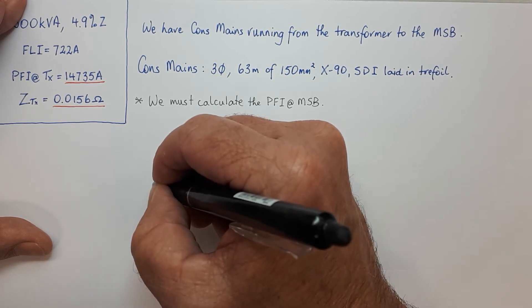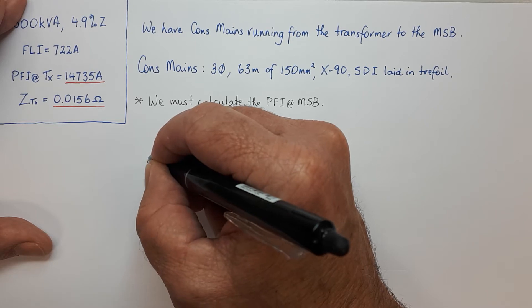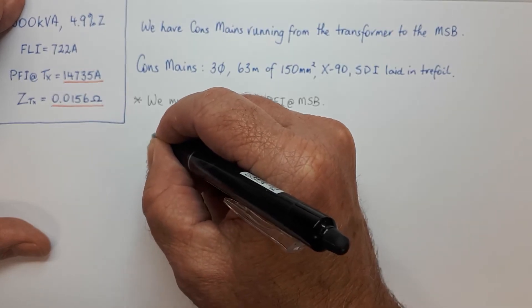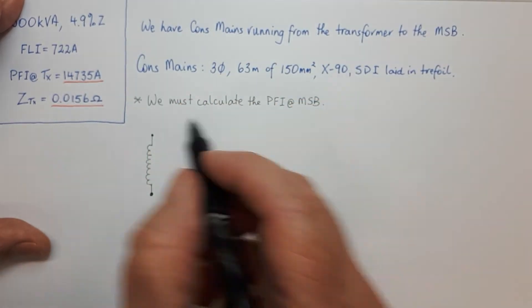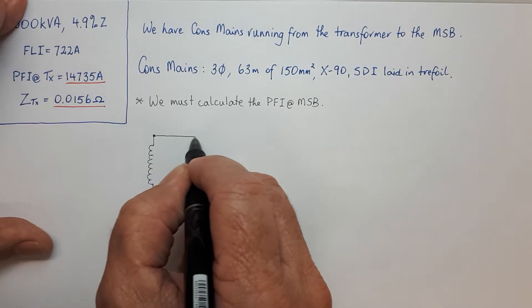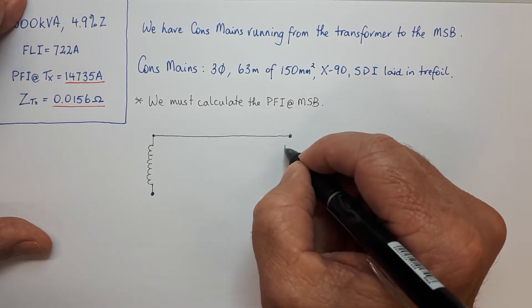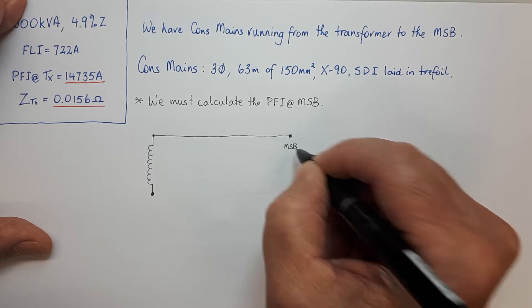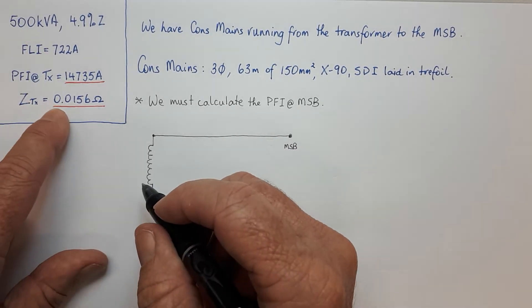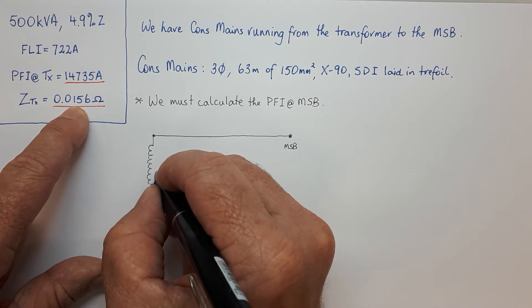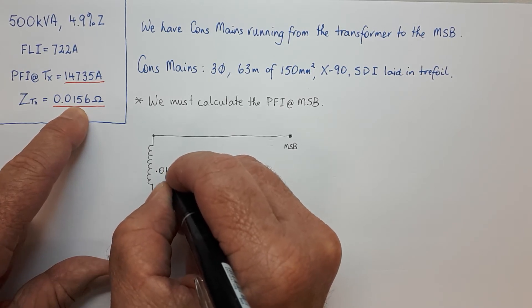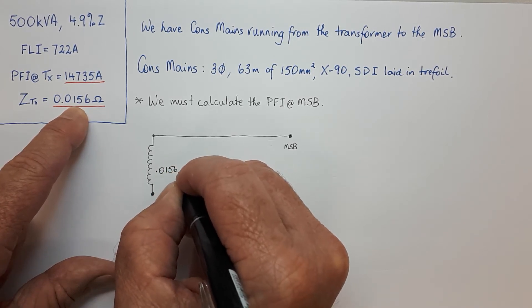We can put the transformer in here, then we can put a single line out to the main switchboard. We can fill in some little details, so we already know that this is 0.0156 ohms so we can put that in.